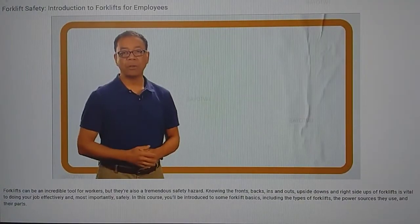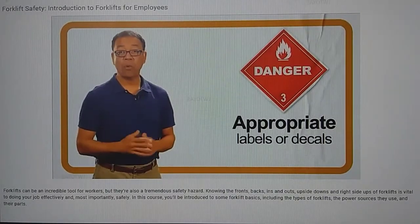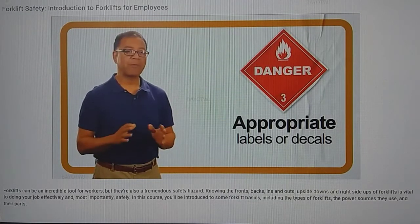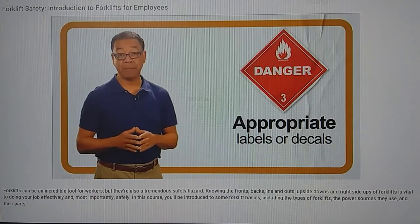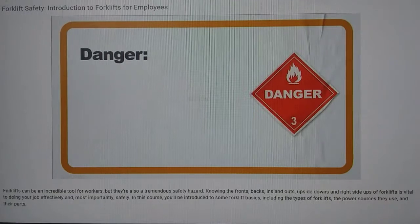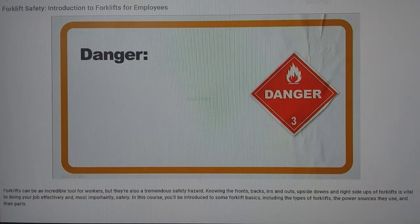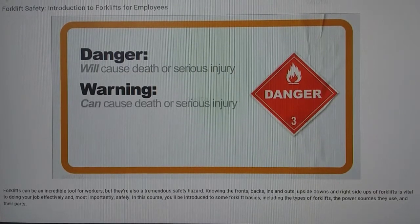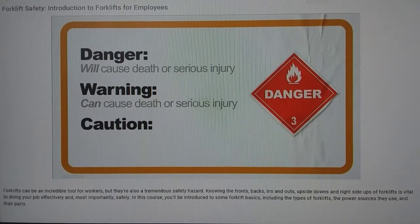Forklifts should also have other appropriate danger, warning, and caution labels, or decals, that provide safety information for the operator. There are three main types. Danger indicates that if the danger is not avoided, it will cause death or serious injury. Warning indicates that if the warning is not heeded, it can cause death or serious injury. And caution means that if the appropriate precautions are not taken, minor or moderate injury may occur.